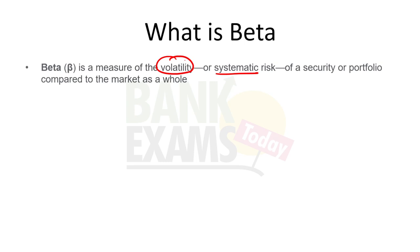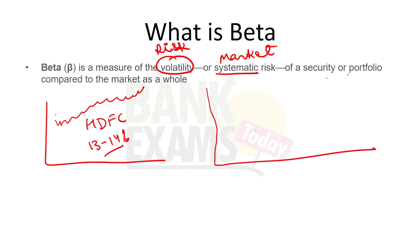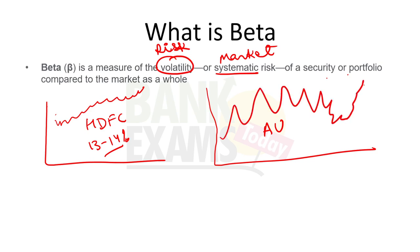So, beta is a measure of volatility or systematic risk — market risk — of a security or portfolio compared to the market as a whole. Volatility means risk. For example, HDFC Bank shares move steadily giving around 13-14% return over five years, while AU Small Finance Bank moves much more erratically. There is clearly higher volatility in AU Small Finance Bank than HDFC Bank. Beta of 1 means market risk — in India, the beta of Nifty 50 is 1.